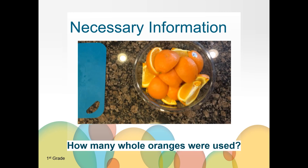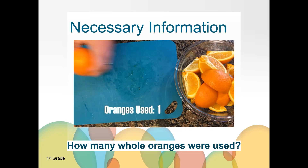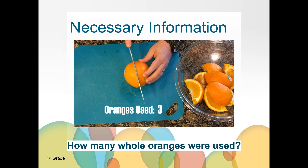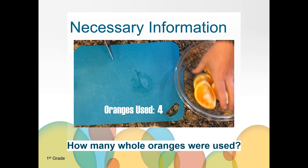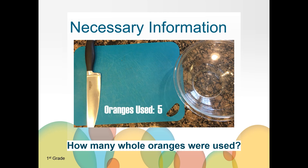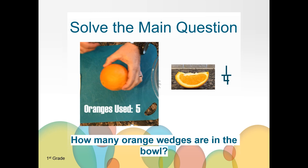Another piece of information we need to know is how many whole oranges were used to make the orange wedges. Watch the video to figure out how many whole oranges were used. There were five whole oranges cut into fourths to make the orange wedges. We also know that each orange was cut into fourths and that each wedge is one fourth of an orange.